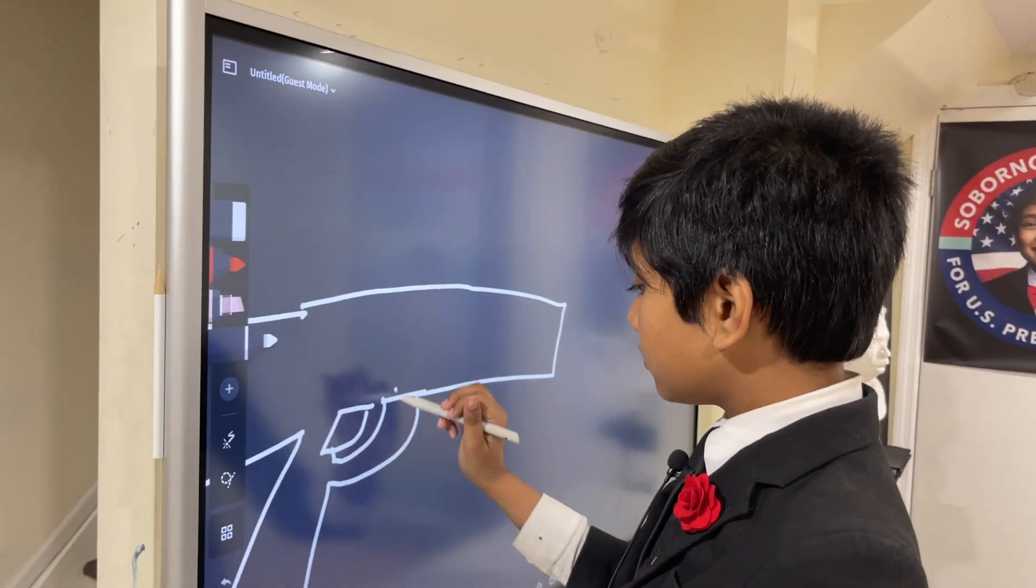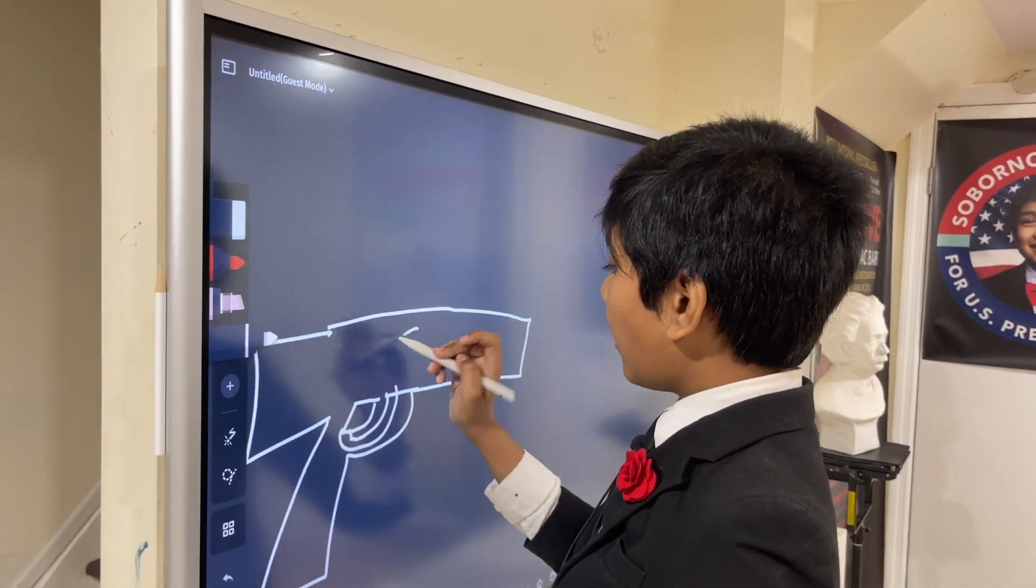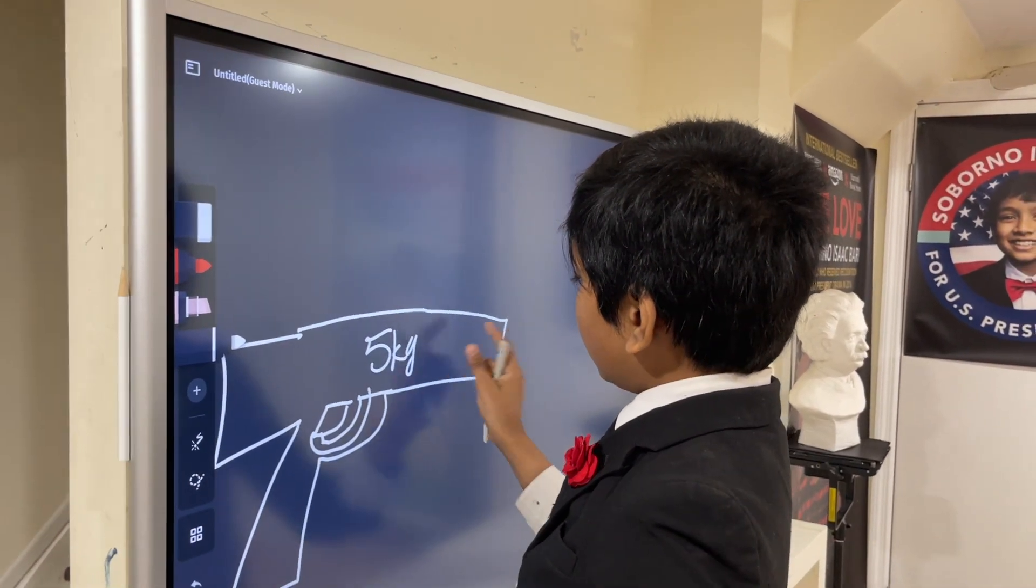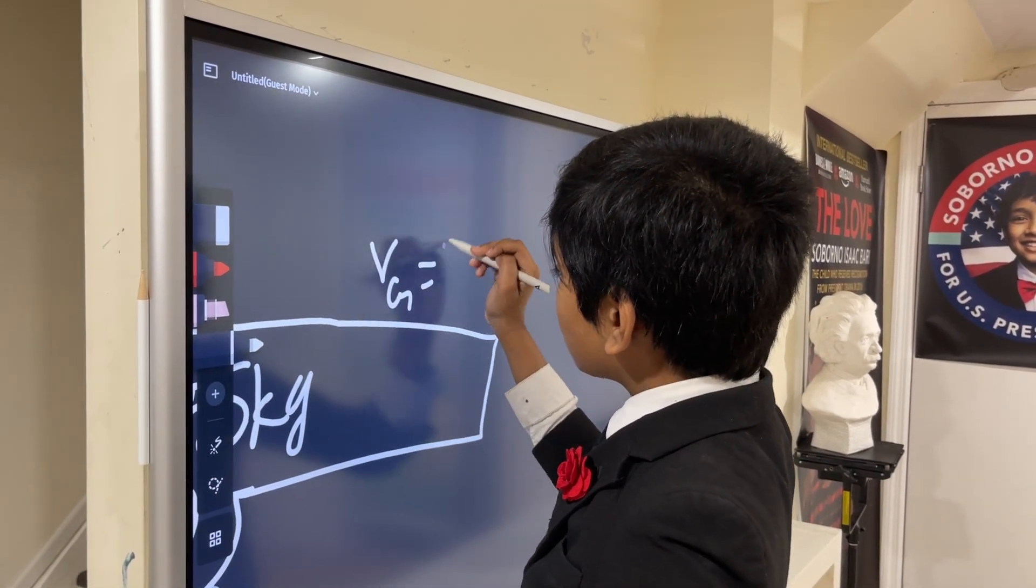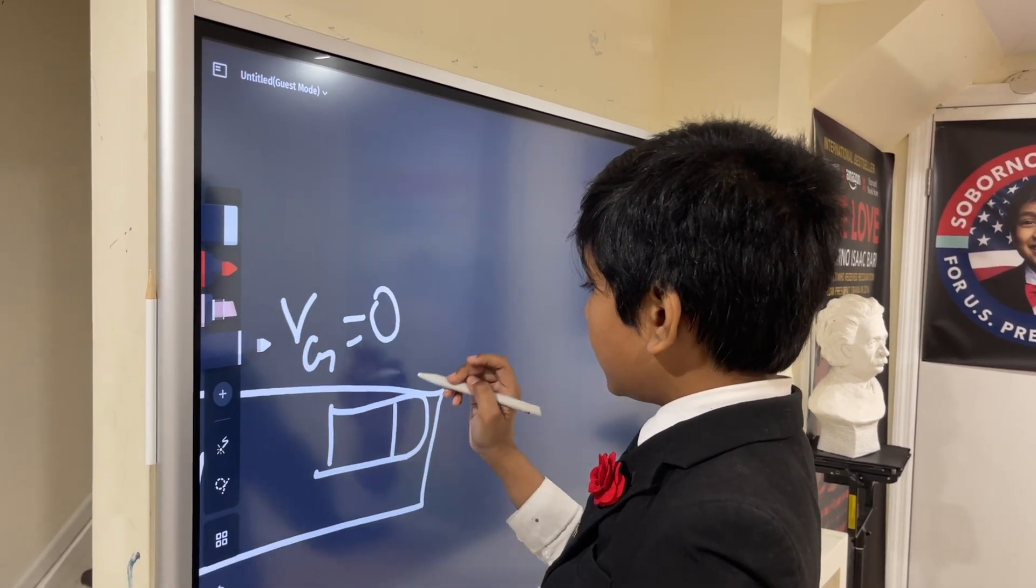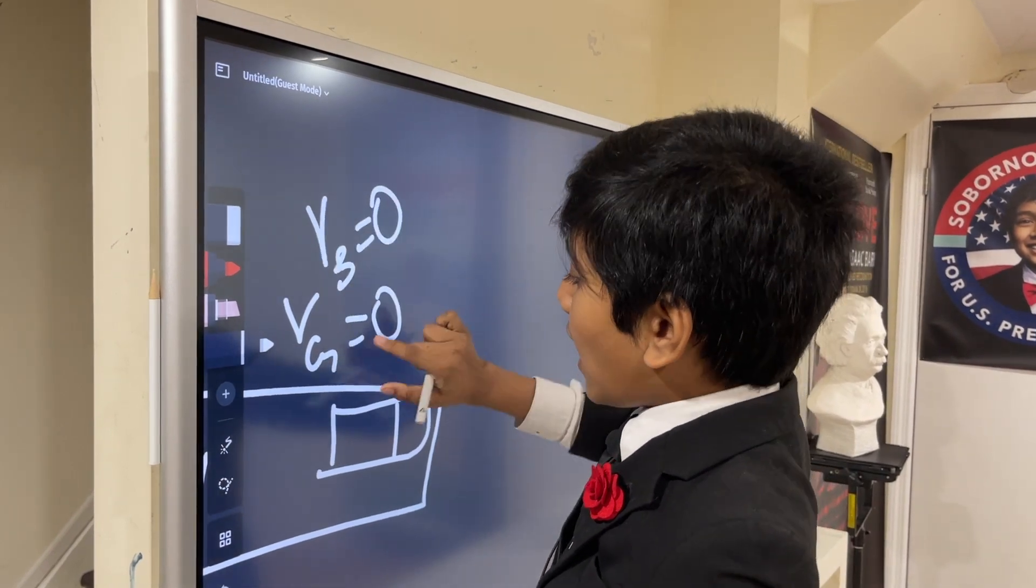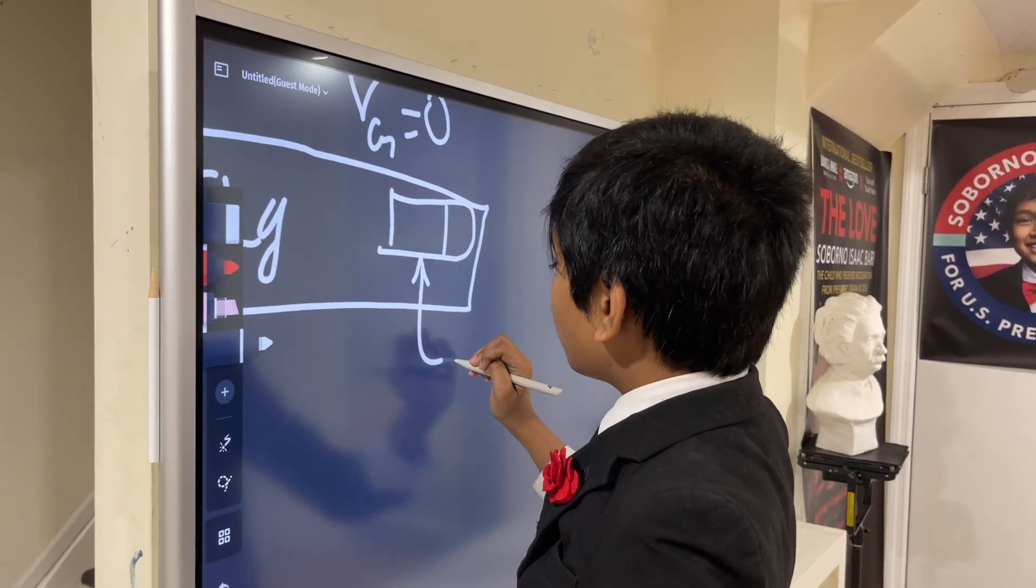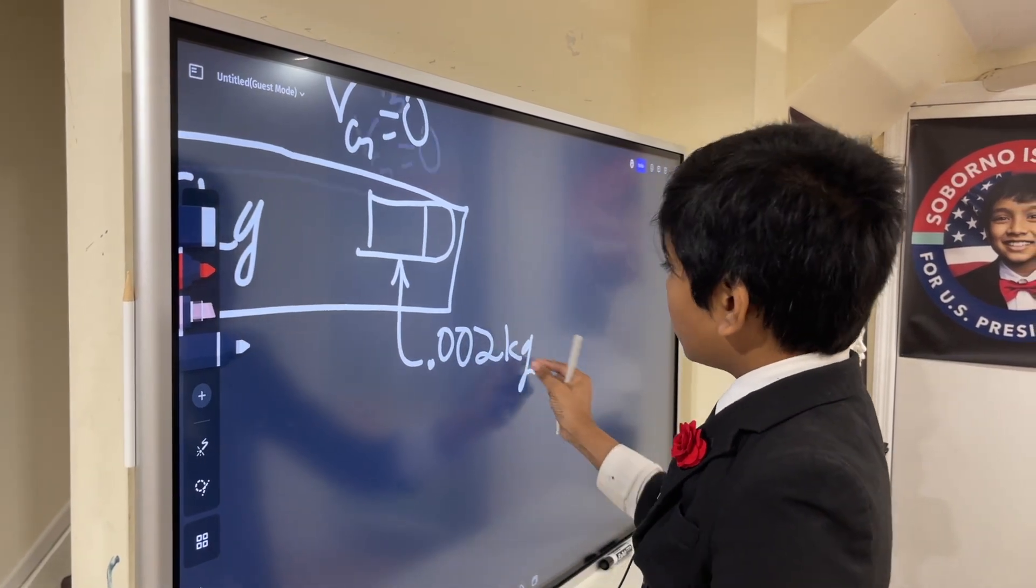So now, let's say this gun is 5 kilograms, and it's at rest right now. And it has a bullet loaded inside it, which is also at rest. And this bullet has a mass of 0.002 kilograms, or just 2 grams.